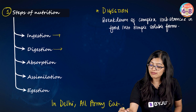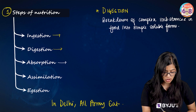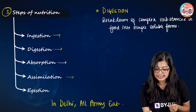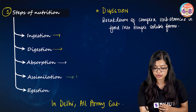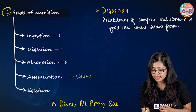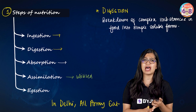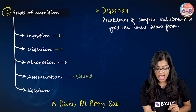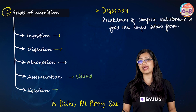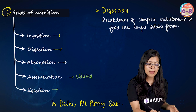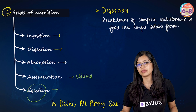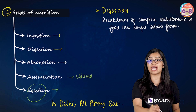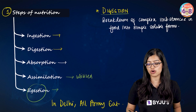Once food is digested it is absorbed into the body, then assimilated or utilized for growth, development, obtaining energy, and various functions within the body. The undigested food is removed out through the body by the process of egestion. Amongst the five steps, the most important definition to remember is that of digestion.